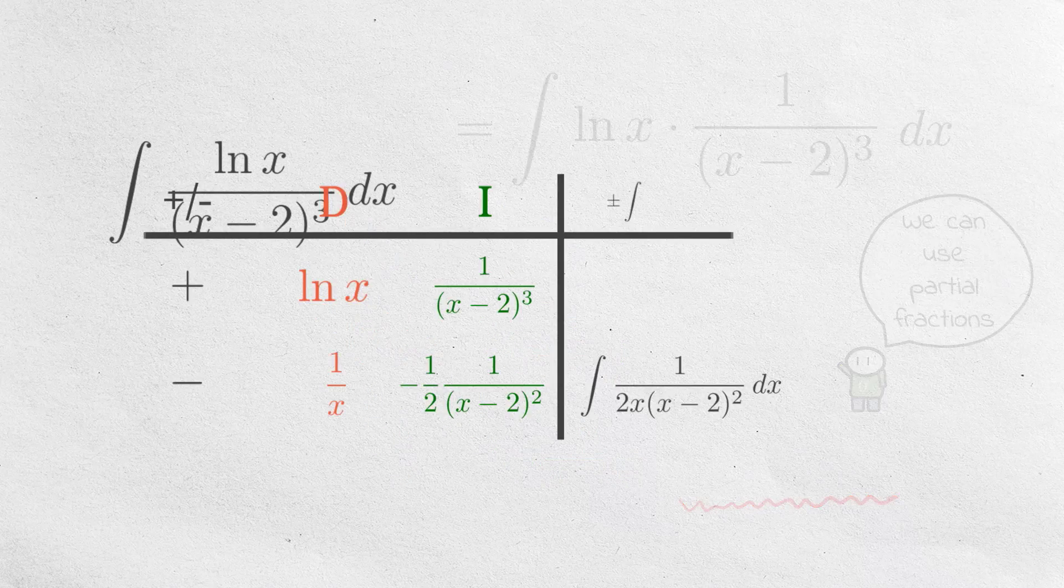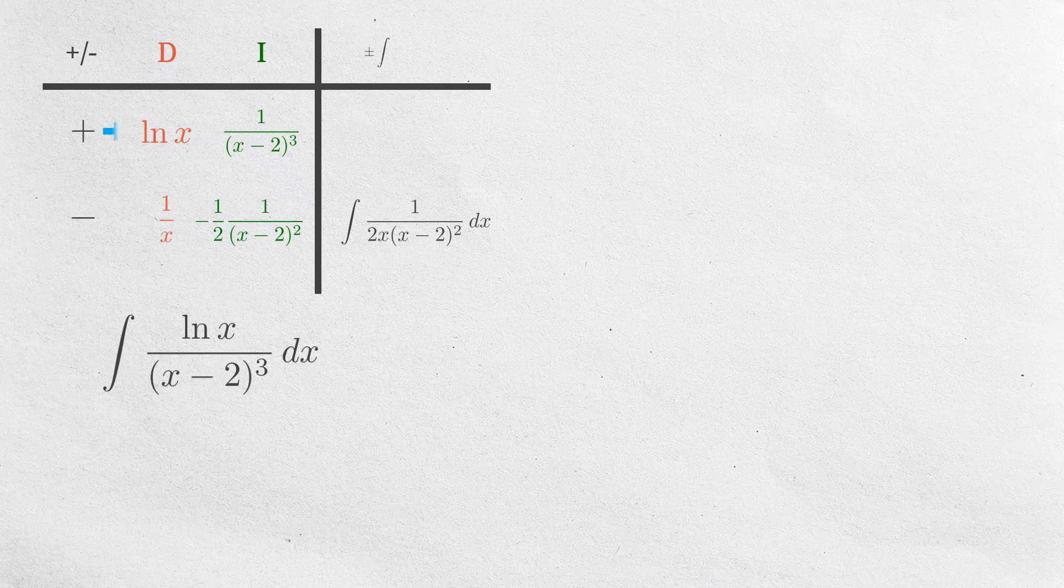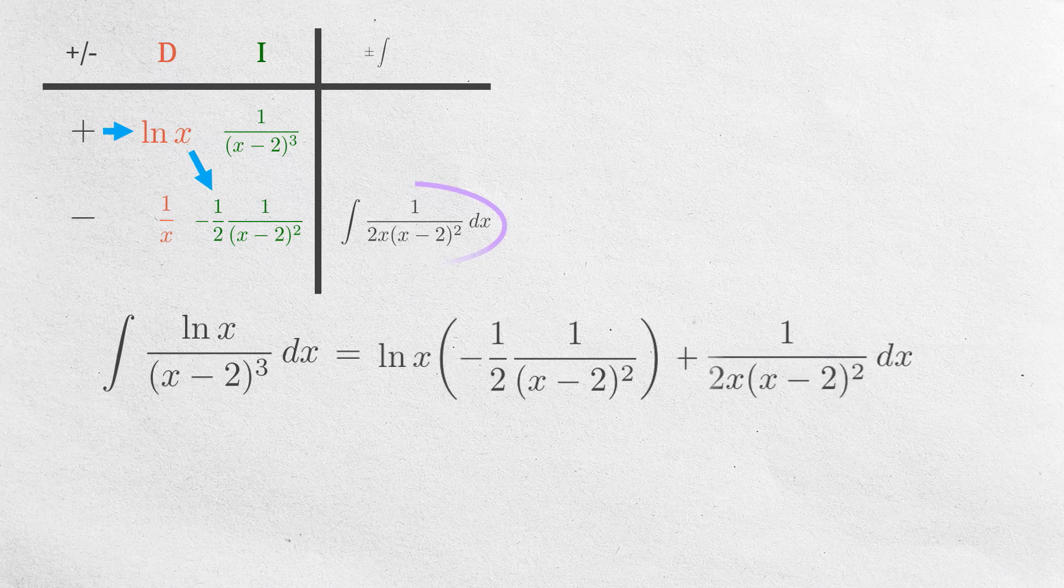Good. But first, let's write down our answer from the table. Putting the arrows, we are ready to write down what our integral is equal to. So, it is equal to ln of x times this, and then plus this integral.